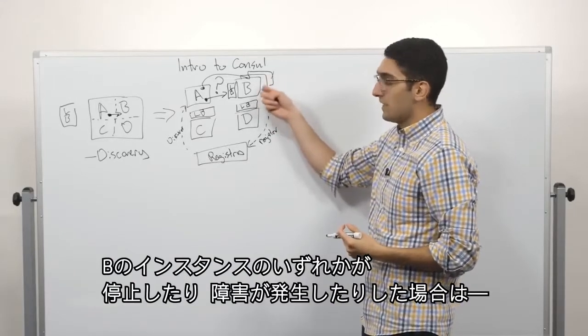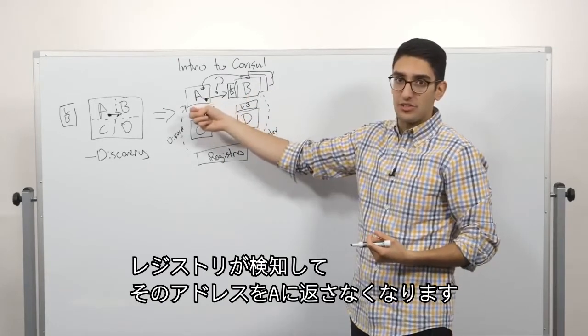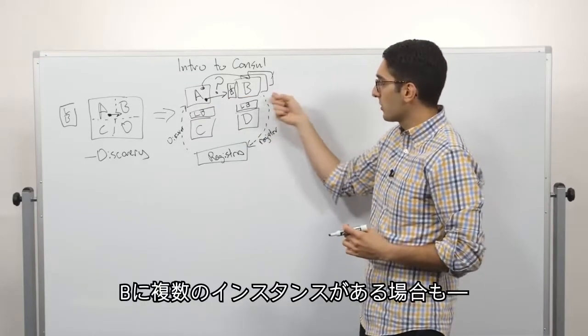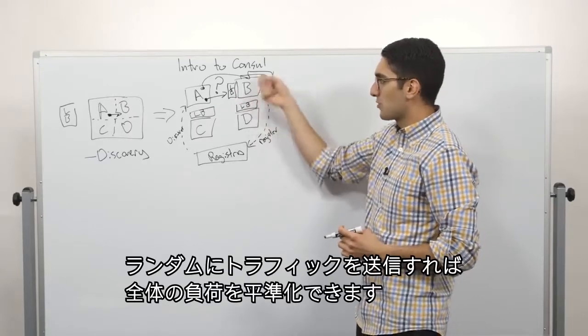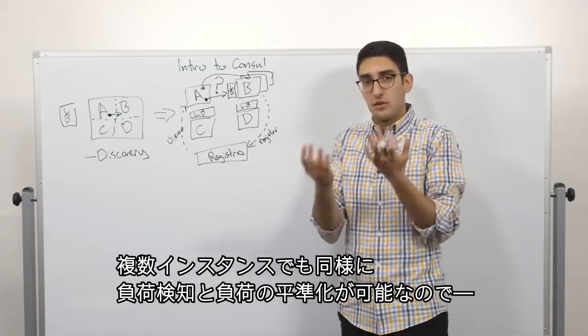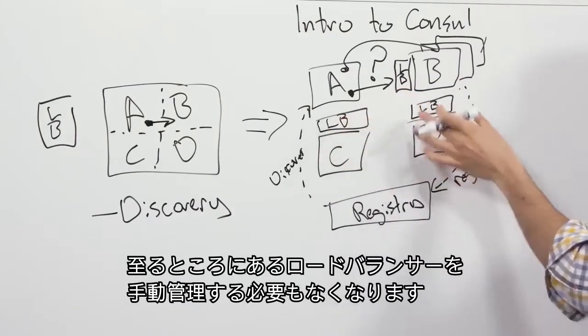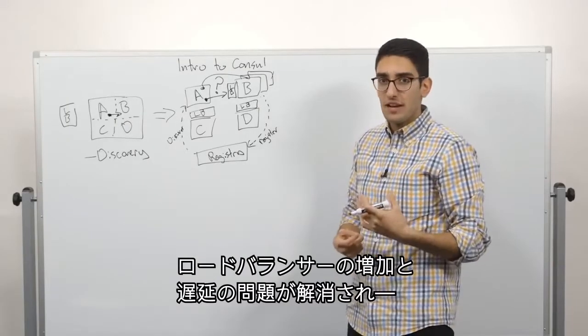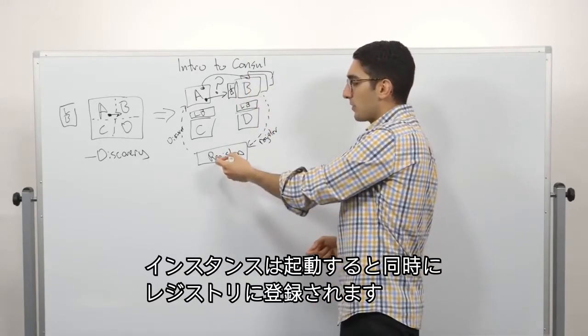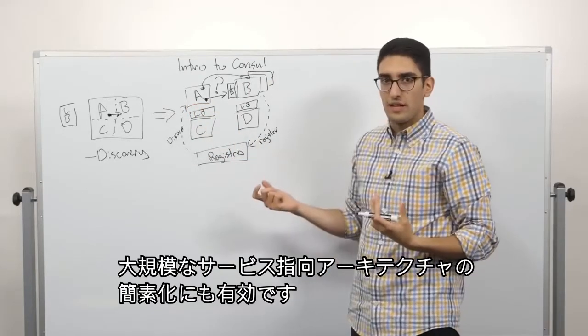Now, if one of the instances of B dies or has a health issue, the registry will pick that up and avoid returning that address to A. So we get that same ability of load balancers to route around failures without actually needing a load balancer. Similarly, if we have multiple instances of B, we can randomly send traffic to different instances and load level across all of them. So we get those same advantages of failure detection and load leveling across multiple instances without having to deploy these central load balancers. The other side of it is now we don't need these manually managed load balancers everywhere. So instead of having a proliferation of load balancers and then waiting days or weeks, the moment an instance boots up, it gets programmatically put into the registry and it's available for discovery and traffic routing. So this helps simplify doing a service-oriented architecture at scale.